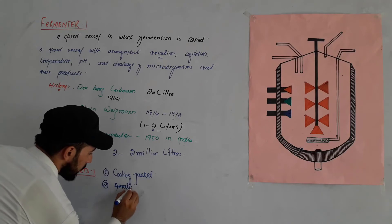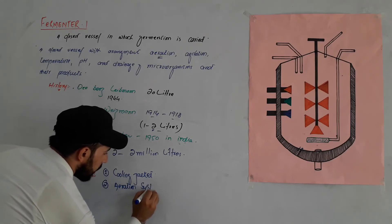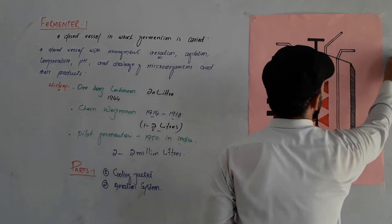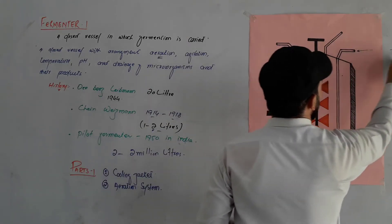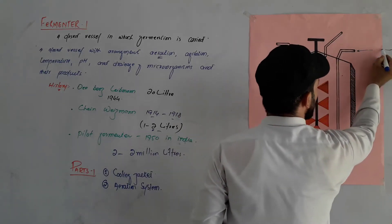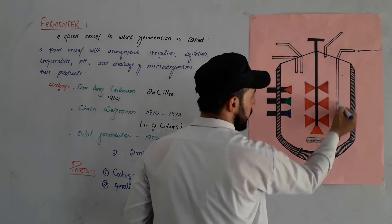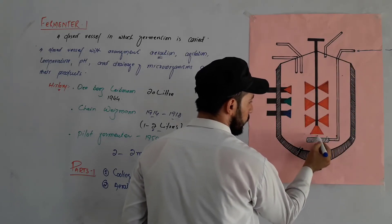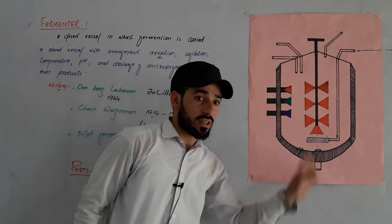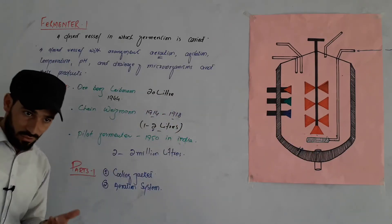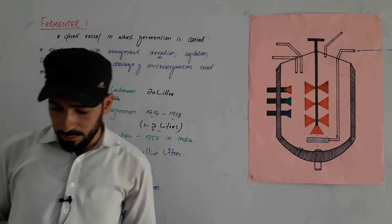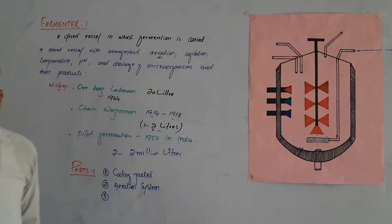Next is the aeration system. The aeration system supplies air inside the fermenter through pipes. Air enters through the pipe into the vessel so that the microorganisms can use the oxygen for their metabolic processes. This is the aeration system — number three important part of the fermenter.